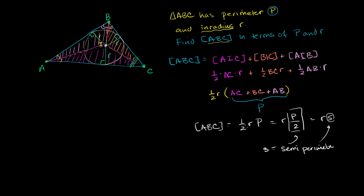I personally prefer the form with P since it's easier to remember that P is the perimeter. This is useful because if someone gives you the inradius and the perimeter, you can find the area. Or if you have the area and the perimeter, you can get the inradius. Given any two of these three variables, you can always find the third.